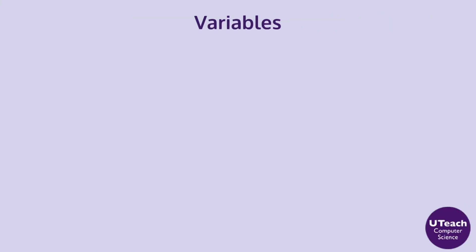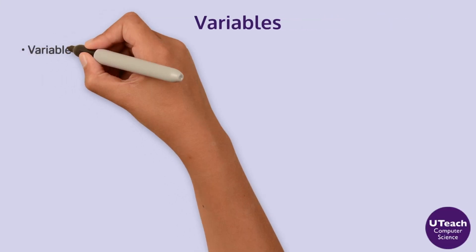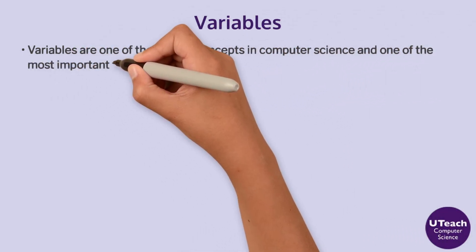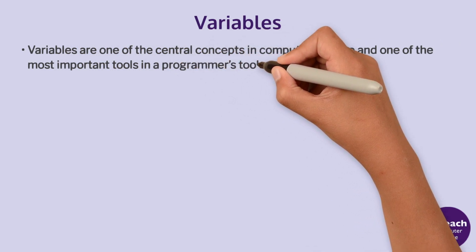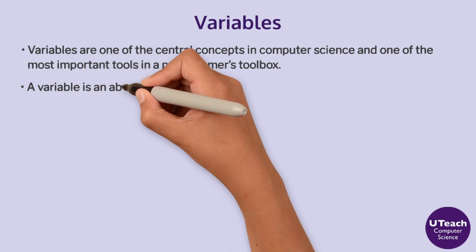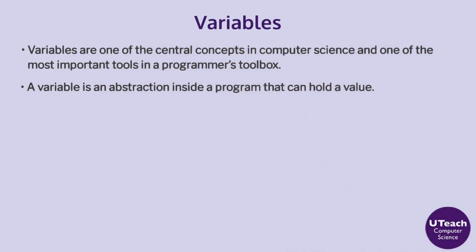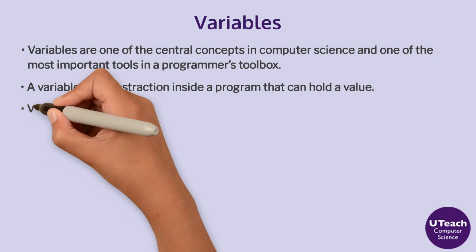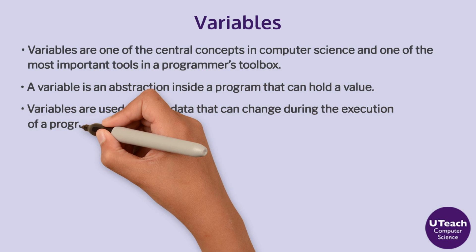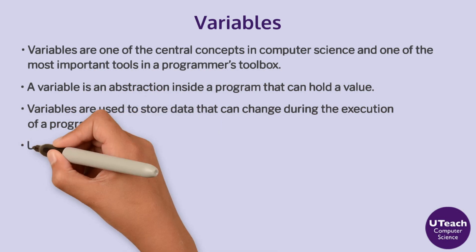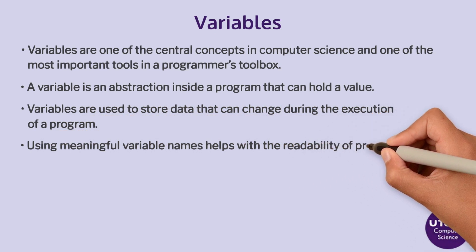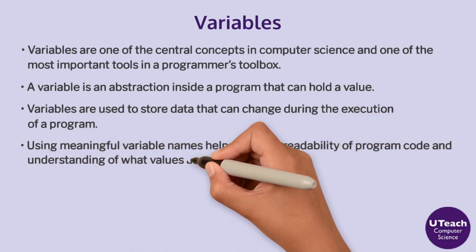To recap variables: variables are one of the central concepts in computer science and one of the most important tools in a programmer's toolbox. A variable is an abstraction inside a program that can hold a value. Variables are used to store data that can change during the execution of a program. Using meaningful variable names helps with the readability of program code and understanding of what values are represented by the variables.